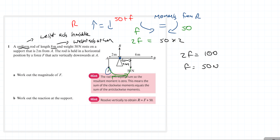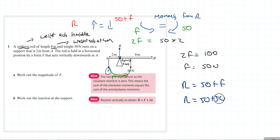To find the reaction at the support, we go back to R equals 50 plus F. Substituting F equals 50, we get R equals 50 plus 50, which equals 100 Newtons. That is the answer for part B. And that is the end of these moments questions — if you have any further questions, please let me know.